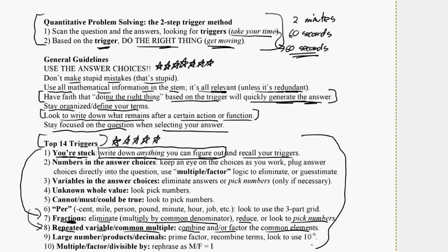These 14 triggers are something I discuss throughout the entire course and review at the end. They really are very important — I believe them to be the 14 most common elements of this test. This is how the UQR goes: I explain a problem based on the trigger, then do a review. I really hope this helped you and that you'll continue checking out my other videos. Thanks very much for your time.